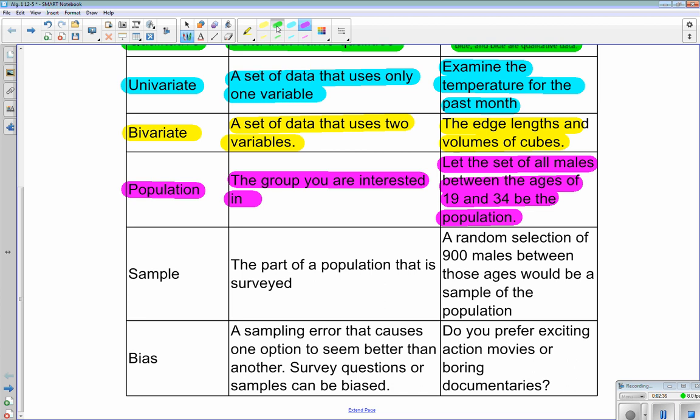And then we have a sample. It's a part of the population that is surveyed. So a random selection of 900 males between those ages would be a sample of the population. In this case, we can't get every male between the ages of 19 and 34, but we are getting 900 of them. That's our sample size.